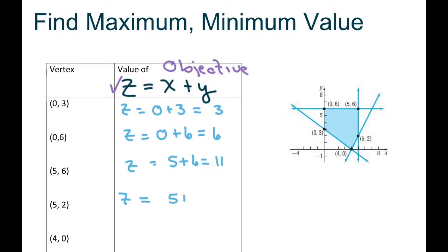And for this one we have z equals 5 plus 2, equals 7. And for the last one we have z equals 4 plus 0, equals 4. Therefore, your maximum value is 11 at (5, 6), and our minimum value is 3.